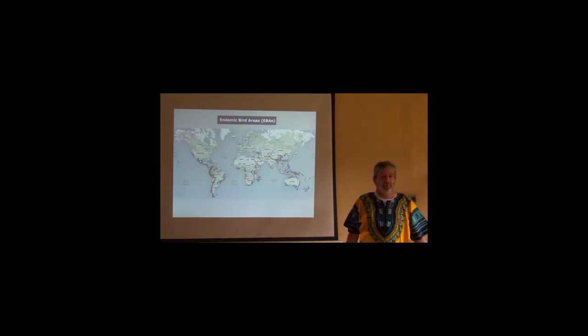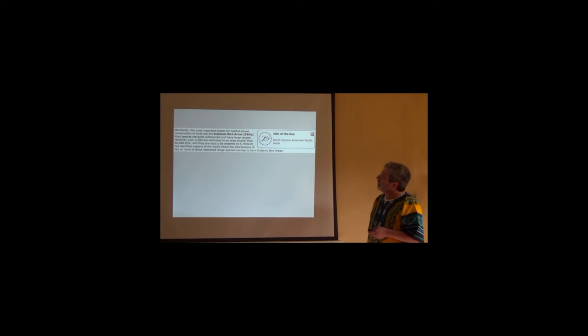So what's going on? What is an endemic bird area? Well, they ought to be areas where species are confined to those areas. This is from the same web page. Worldwide, the most important places for habitat-based conservation of birds are the endemic bird areas. So right away we're doing marketing. Most species are quite widespread and have large ranges. However, over 2,500 species are restricted to an area smaller than 50,000 kilometers squared. And they are said to be endemic to it.